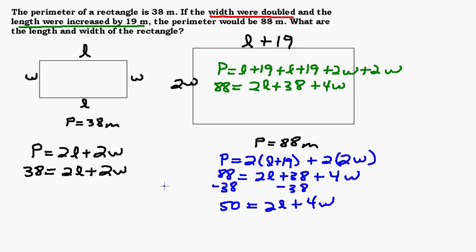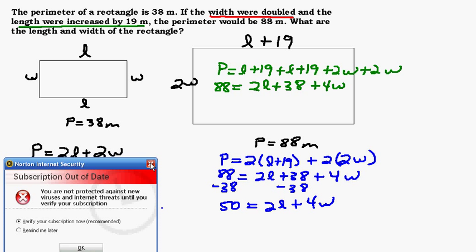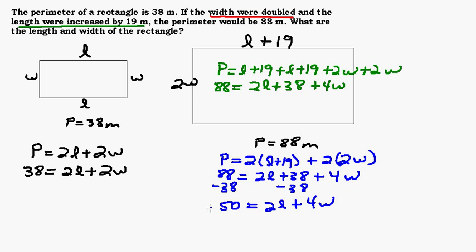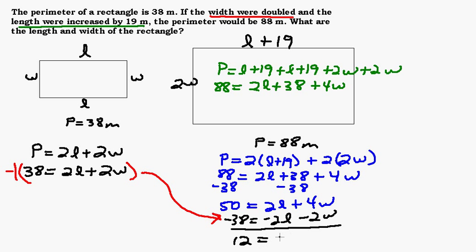Now we've got two equations with two unknowns here, and we need to solve them by either elimination or substitution. I'm thinking elimination for this one, because I see a 2L here and a 2L here. So if I multiply this whole equation by a negative 1, I'll get negative 38 equals negative 2L minus 2W. Then I'm going to add these equations together, and I get 12 equals 2W. Therefore, W equals 6.